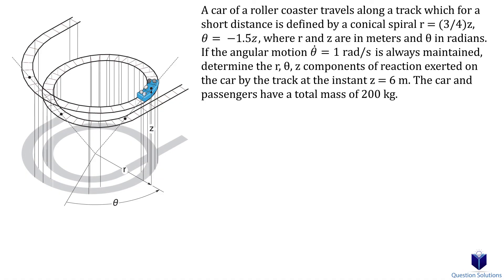So far we looked at a normal F equals ma question with cylindrical components, and another question where we had to calculate the psi angle. For our last question, let's look at an example where we consider the z axis as well. In this question, we need to find the radial, transverse, and z forces exerted on the car by the track — in simple terms, we are looking for Fr, F-theta, and Fz.